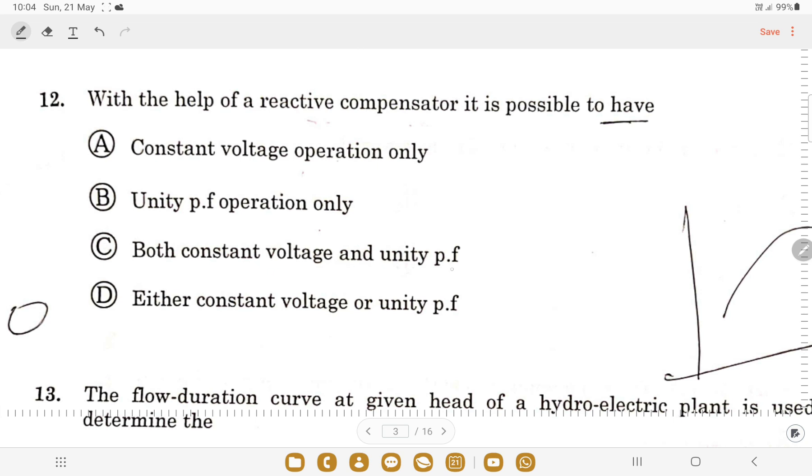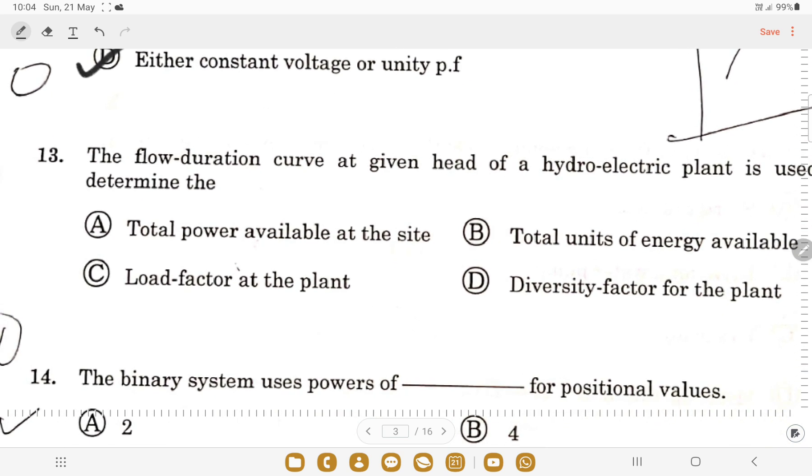Next: with the help of reactive compensator, it is possible to have? In a reactive compensator, we can add positive or negative VAR, so we can apply for either constant voltage or unity power factor. Option D is the correct one.